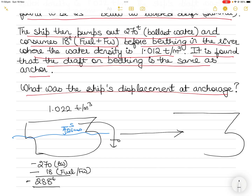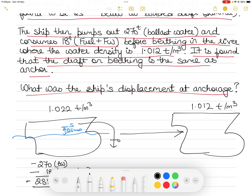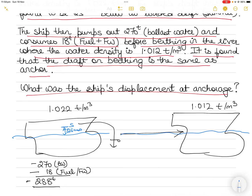It then proceeds to berth at the river, the density of which is 1.012 tons per metric cube. However, on berthing, the draft is still the same, although we did get rid of 288 tons at the mouth of the river. So whatever the displacement was at the mouth of the river, when we reach the berth it should be 288 tons lighter. But the draft is the same.